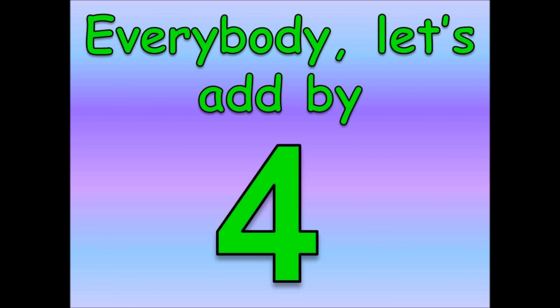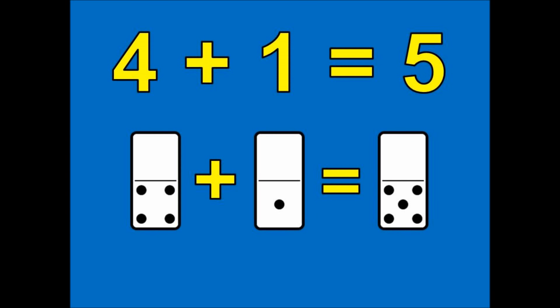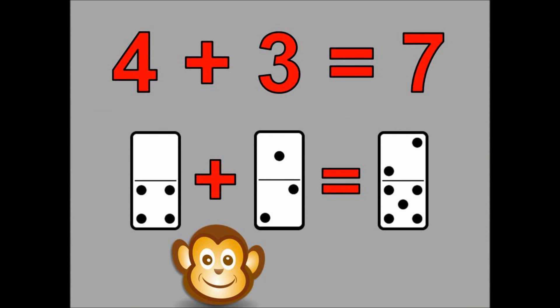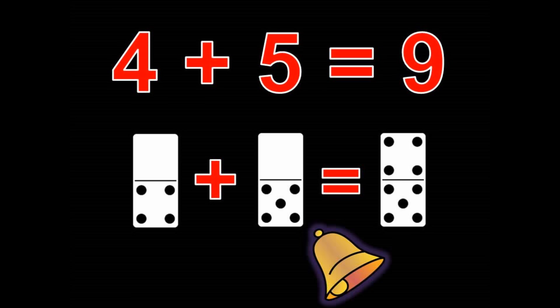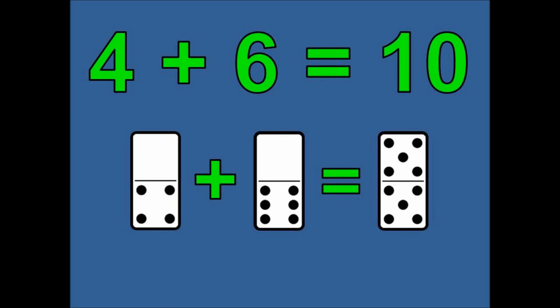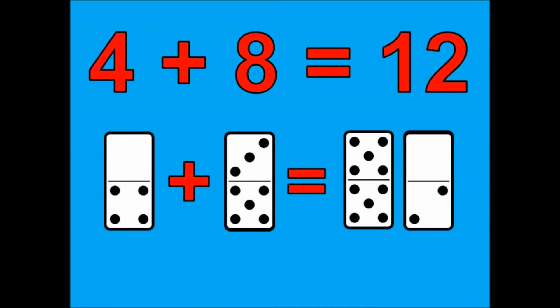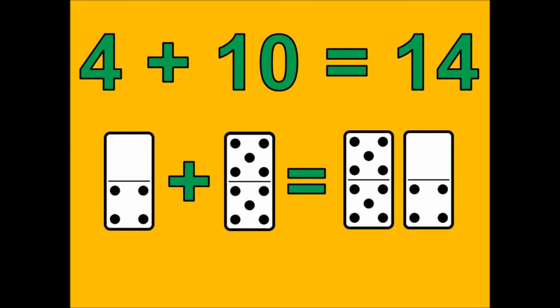Come on kids, everybody let's add by four. Come on kids, everybody let's add by four. Four plus zero is four. Four plus one is five. Four plus two is six. Four plus three is seven. Four plus four is eight. Four plus five is nine. Four plus six is ten. Four plus seven is eleven. Four plus eight is twelve. Four plus nine is thirteen. Four plus ten is fourteen.